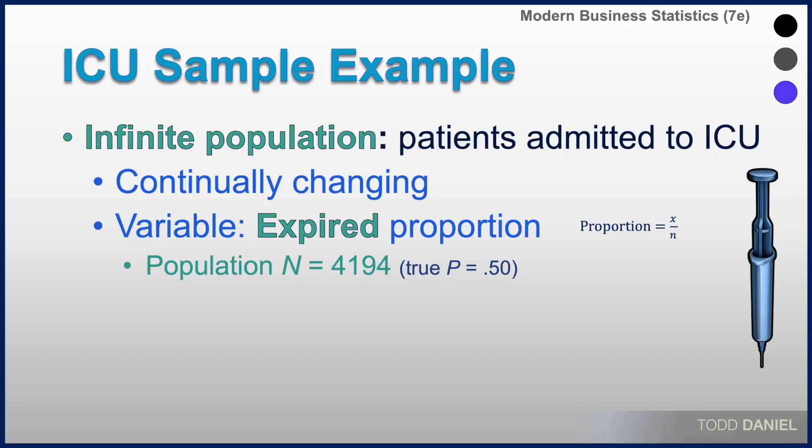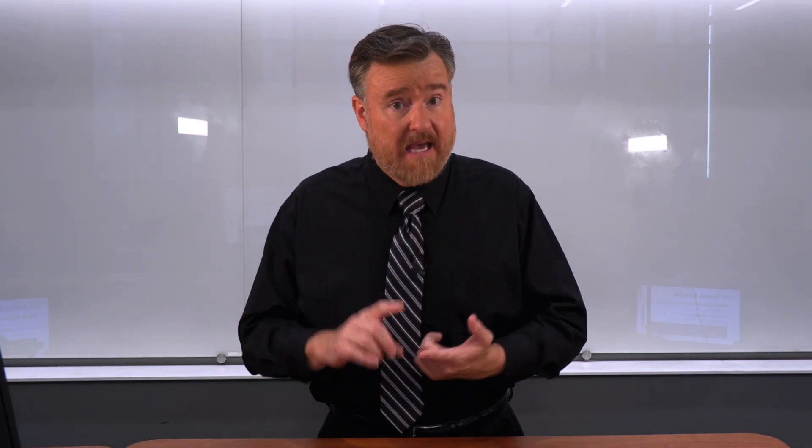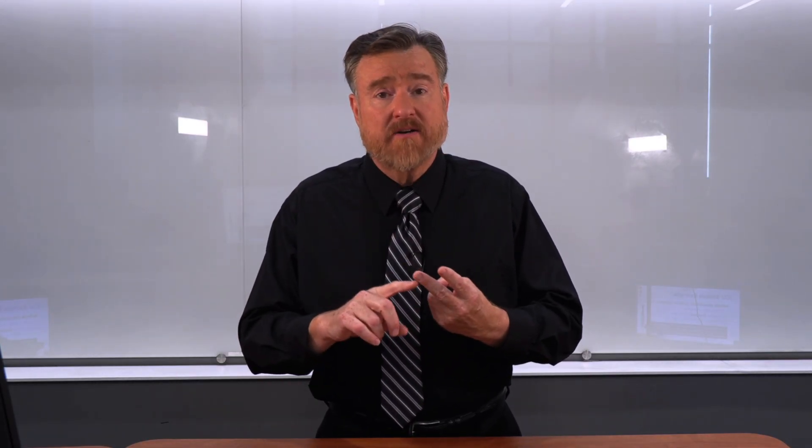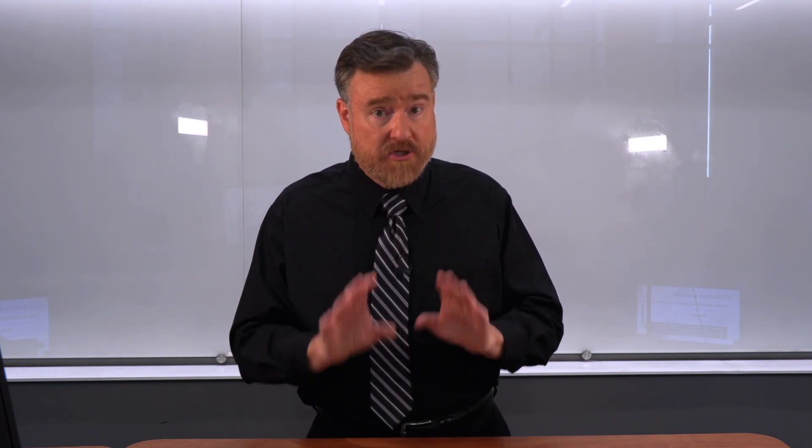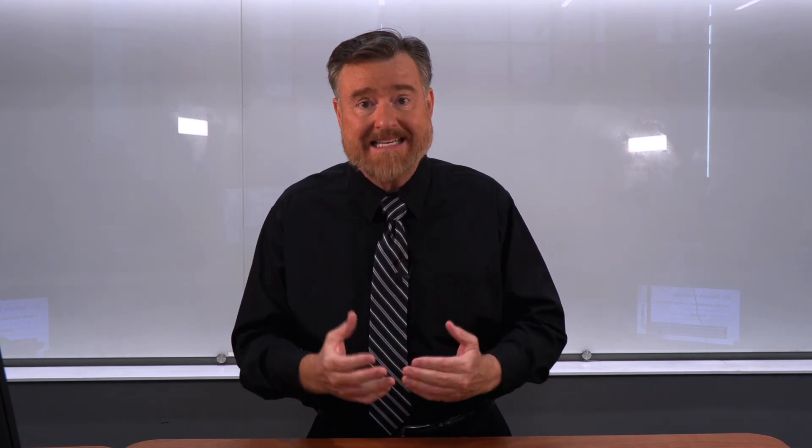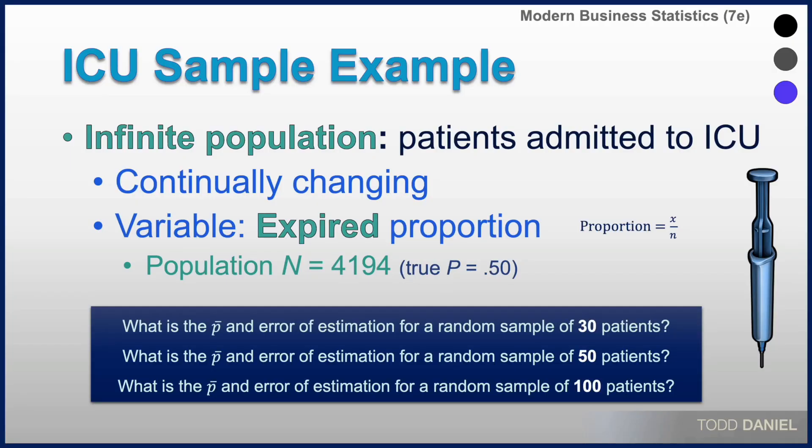The variable that we are going to be using for our proportion is the variable expired. It is referring to the number of patients who pass away while they are in the ICU. We will calculate the estimated value and the standard error of the proportion for various sample sizes, each time checking to make sure that our sample size is large enough. We will calculate with a sample of 30 patients, 50 patients, and 100 patients.